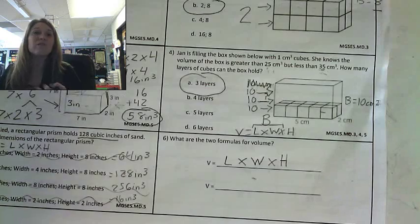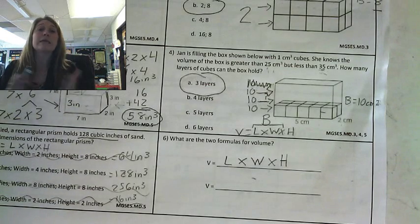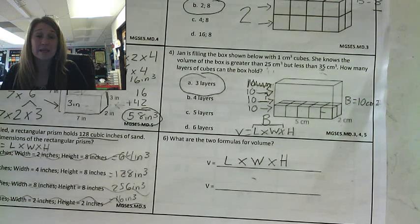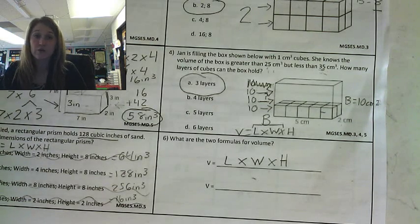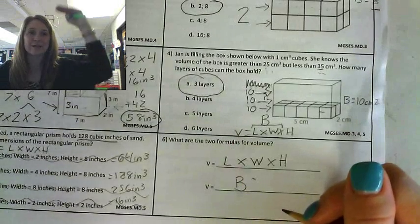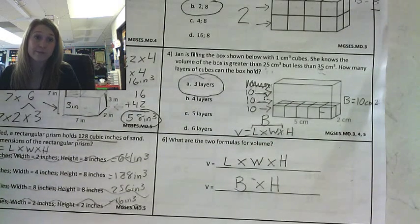What's that second formula? We've been talking about it as we've been going over this first page. When we do length times width, what does that give me? It gives me the area of the base, big B. So volume can also be your big B base times the layers times the height. Those are your two formulas for volume.